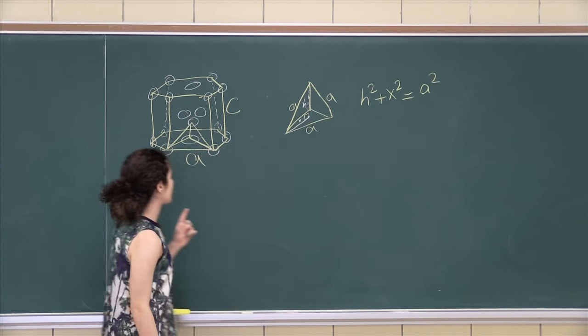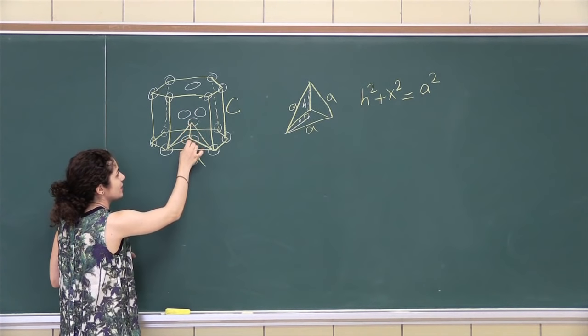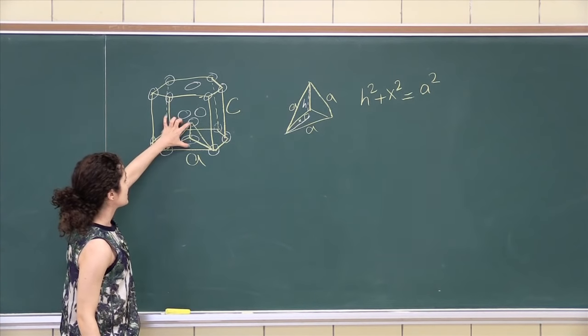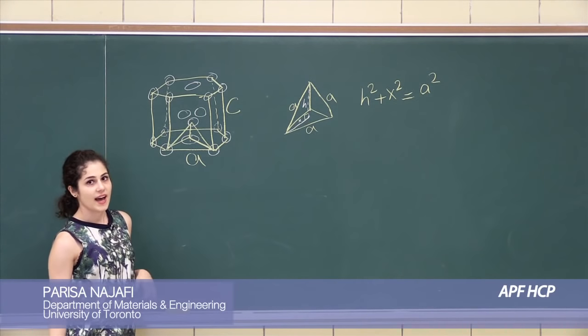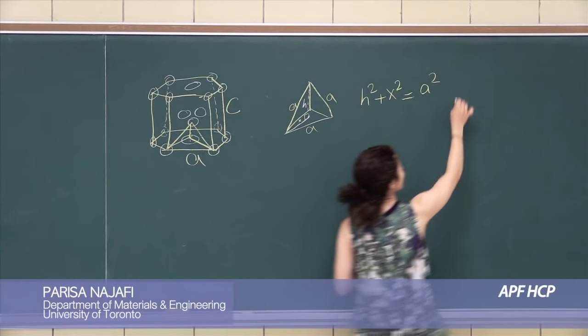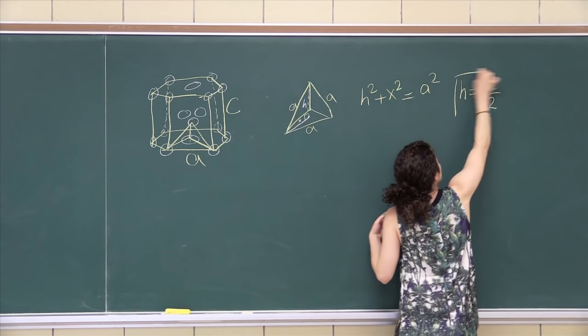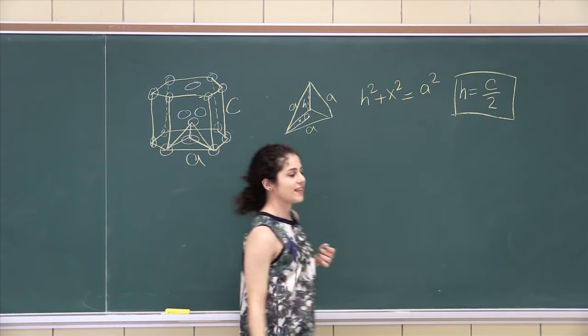H is actually really simple. If you look at the HCP structure, this little line here would be the H. And if you can see that, it's actually the half, halfway point. So H is equal to C over 2. Good. We got that down.